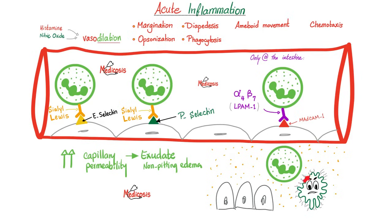We need to make those bacteria tasty so that macrophages can eat them. In order to facilitate this, we need to dilate the vessel to make it more leaky. To dilate the blood vessel, we need histamine, nitric oxide, and bradykinin. So bradykinin is a vasodilator, and bradykinin promotes acute inflammation.